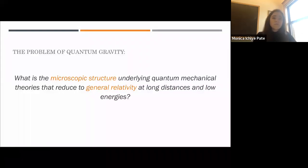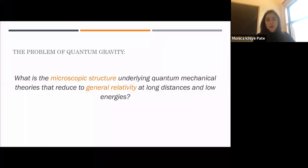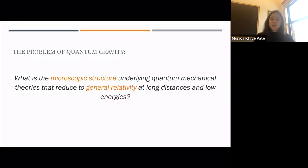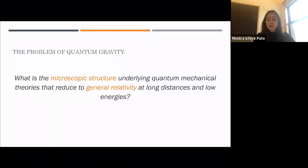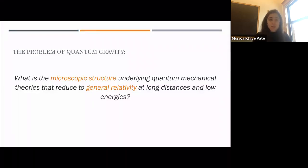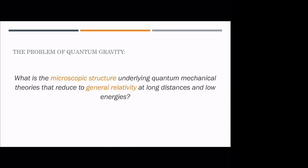To get started, I'm going to frame the discussion by first posing what we might think of as the problem of quantum gravity. Very broadly, that is: what is the microscopic structure underlying quantum mechanical theories that reduce to or reproduce general relativity at long distances and low energies? We care about this question because we think it's fundamentally important, but unfortunately it's also quite vague — it's unclear what it would mean to answer the question as well as where the challenges lie.